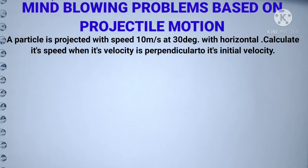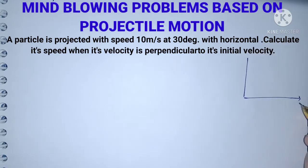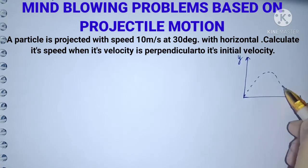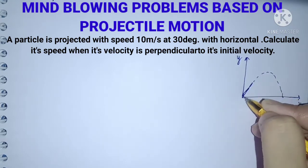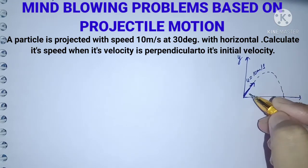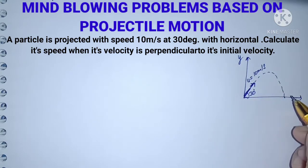Let's read the first question: a particle is projected with speed 10 m/s at 30 degrees with horizontal. Calculate its speed when its velocity is perpendicular to the initial velocity. We will draw the coordinate system — x-direction and y-direction — and draw the projectile path. The initial velocity u = 10 m/s at angle 30 degrees. We need to find when the initial and final velocity are perpendicular.